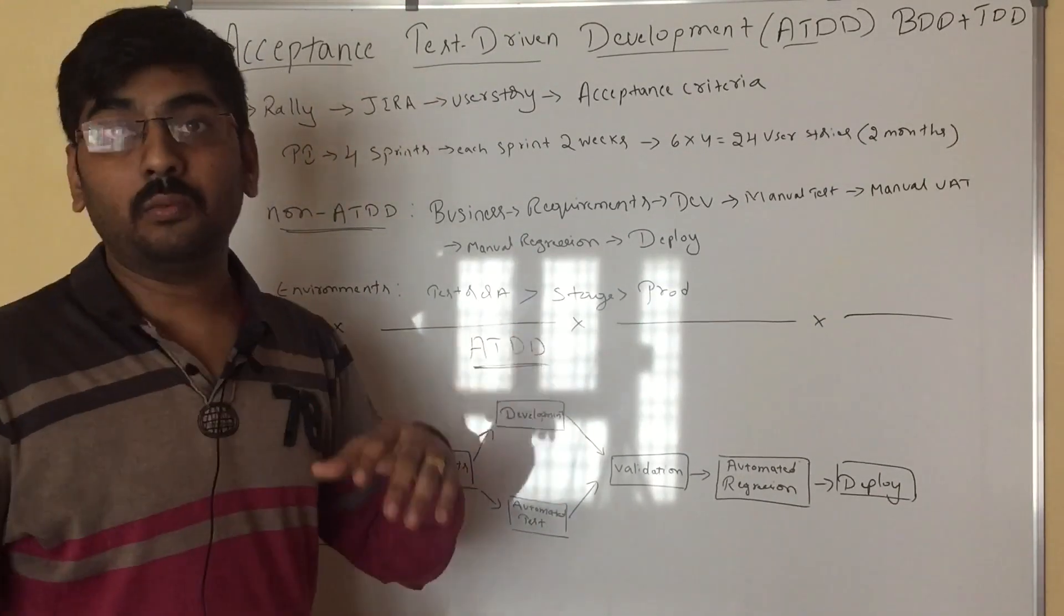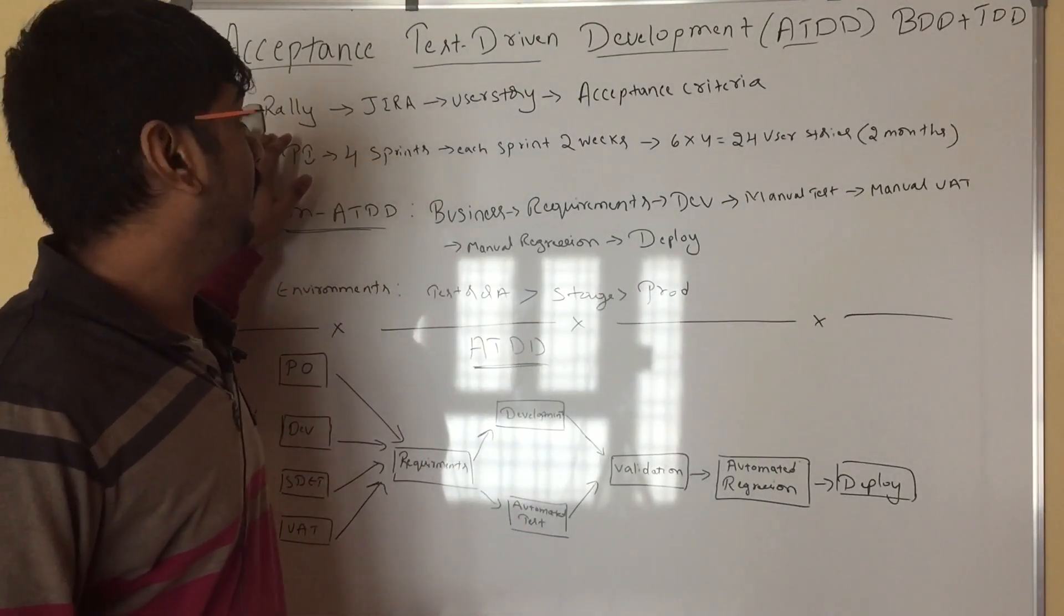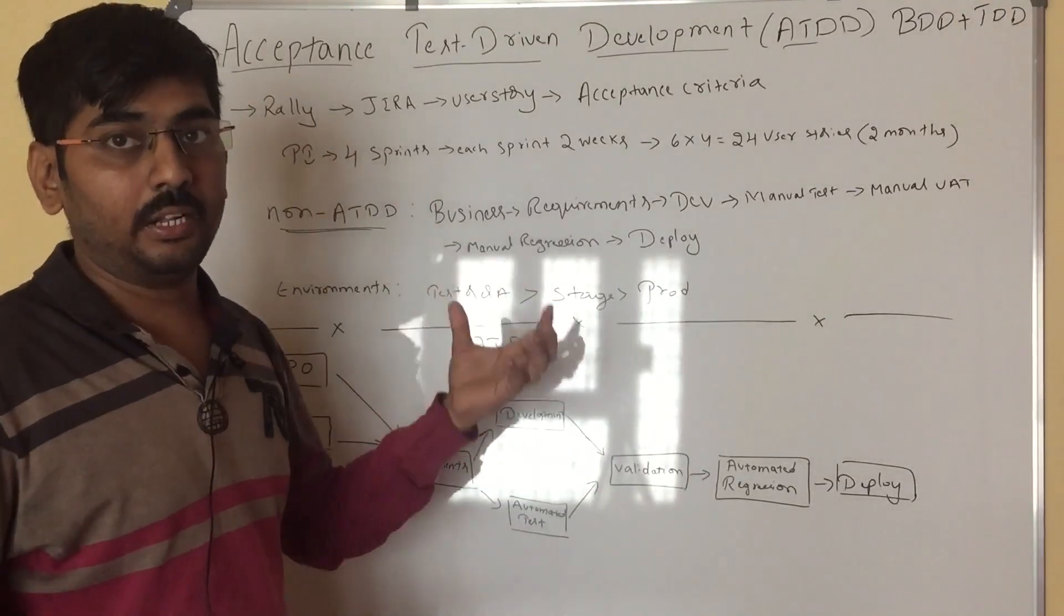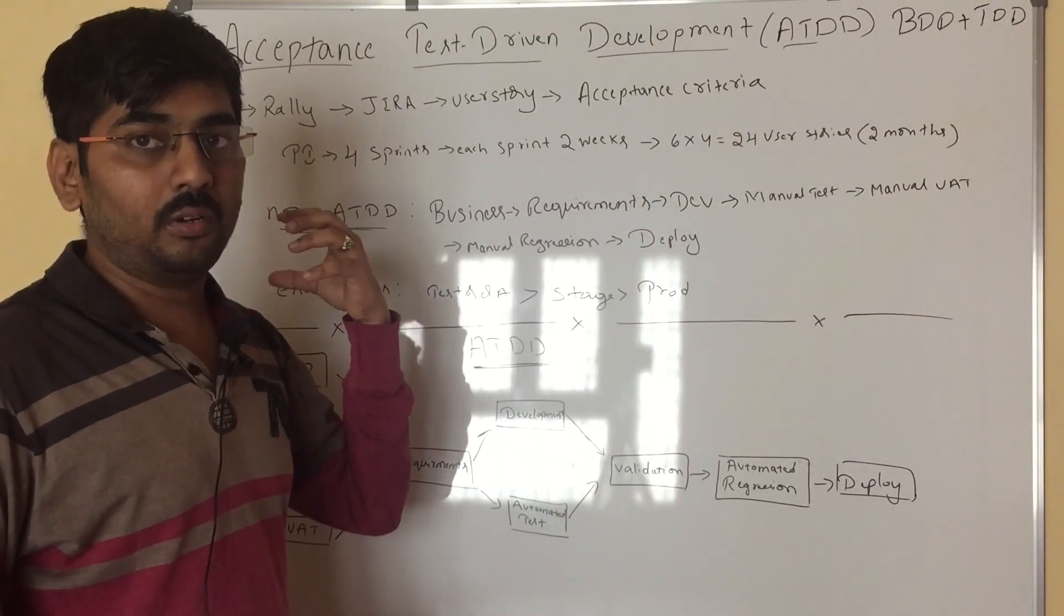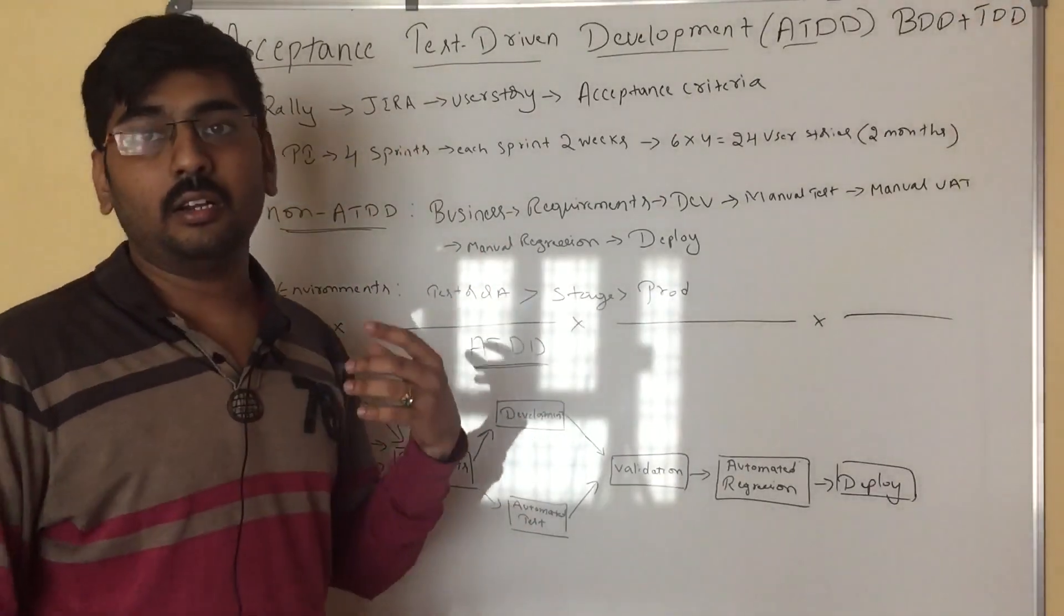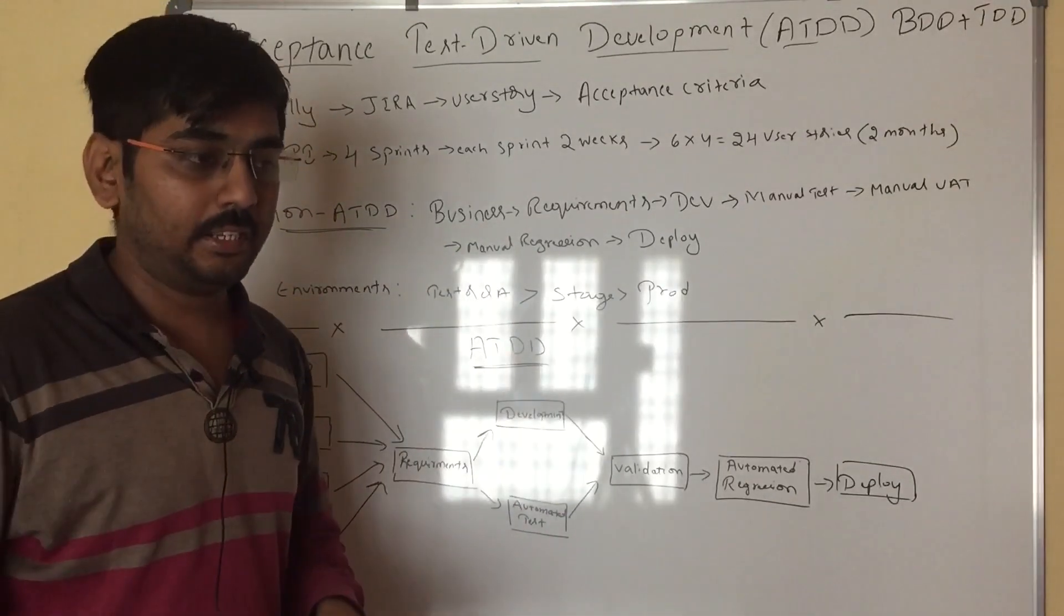Let's discuss one by one what they are. In some of the companies, they will be having Rally or Jira for this Agile culture. We have user stories, and for each and every user story, we will be having an Acceptance Criteria.